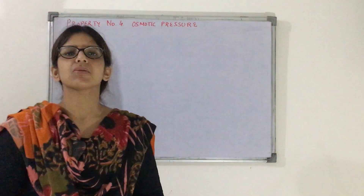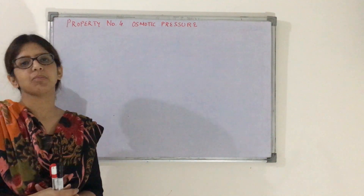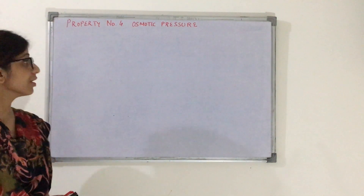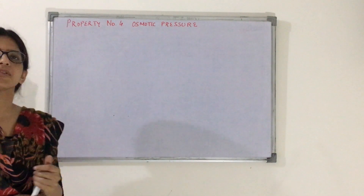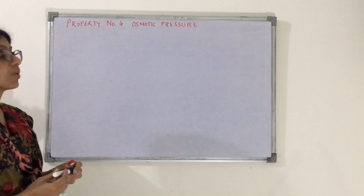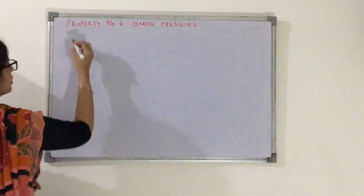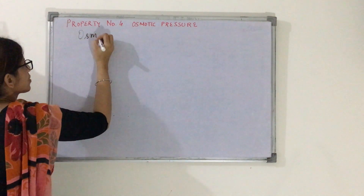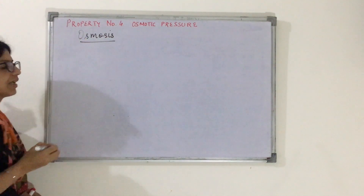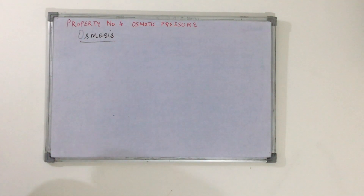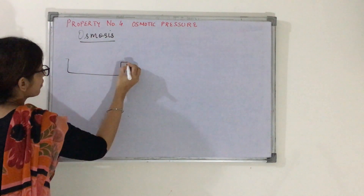Good evening students. We are going to talk about the fourth colligative property, that is osmotic pressure. But before we delve into this, let's first understand what osmosis is.